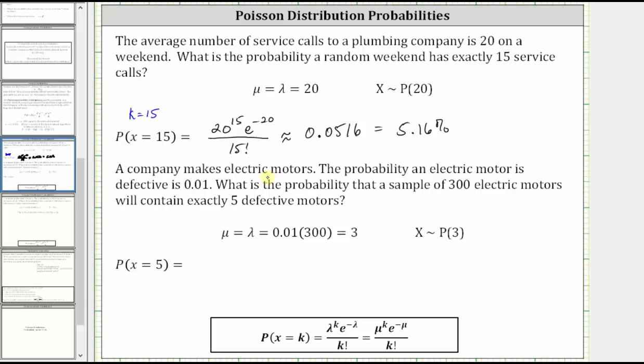Next, a company makes electric motors. The probability an electric motor is defective is 0.01. What is the probability that a sample of 300 electric motors will contain exactly five defective motors?